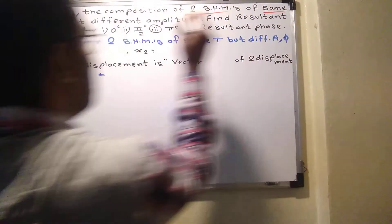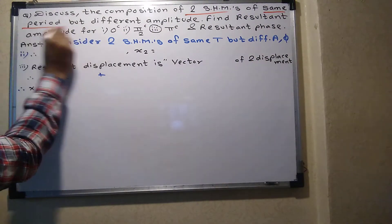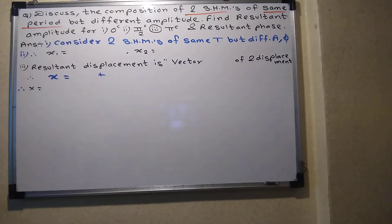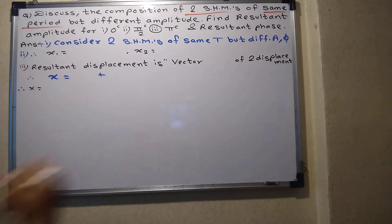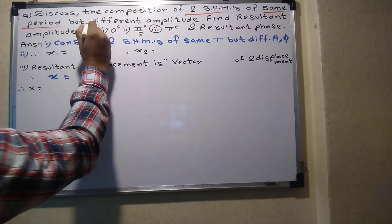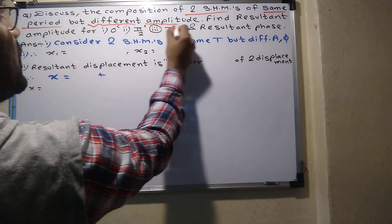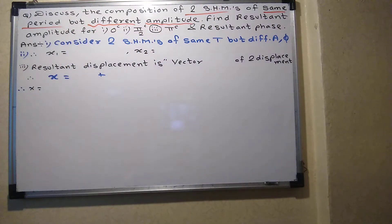The condition is that the two SHMs have the same period. The full form of SHM is Simple Harmonic Motion. Those two SHMs have different amplitudes.